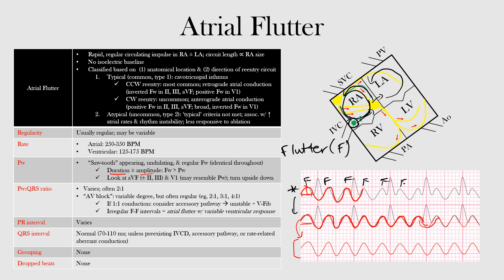Unlike intra-atrial reentrant tachycardia and other forms of paroxysmal atrial tachycardia that have an anatomically small re-entry pathway, atrial flutter impulses travel in a longer and larger circular course within the atria, producing continuous F waves. A helpful memory aid: the pathways are longer and larger, and the flutter waves themselves also tend to be longer and larger than normal P waves.